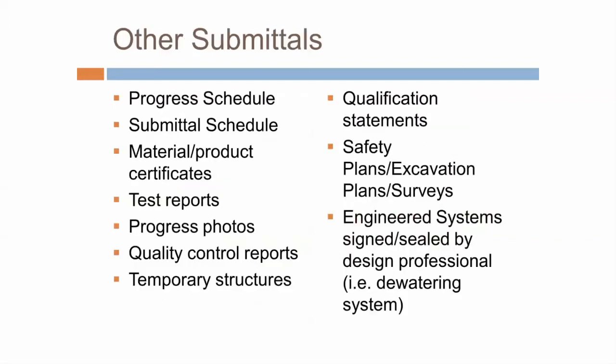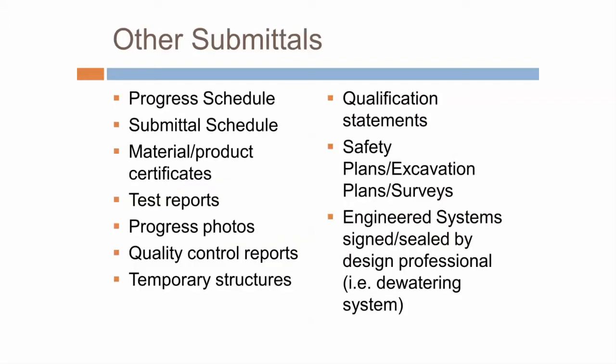There are other types of submittals. Things like progress schedules, material and product certificates, test reports, and photos — typically required periodically to demonstrate progress on the project. Quality control reports. Temporary structures gets an asterisk — that has a hybrid we'll talk about later. Qualification statements, safety plans, excavation plans, surveys. All of these are submittals that the contract documents typically require the contractor to submit. But would you really approve them the same way you would approve a shop drawing? The answer is really no.